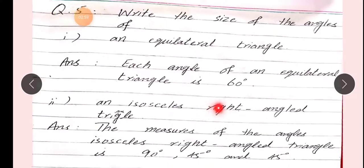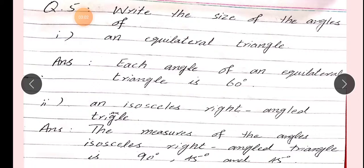Next, question number 5: Write the size of the angles of number 1, an equilateral triangle. Hamne inmen angles ke size batane hain. First poocha gaya hai, equilateral triangle mein. Iska answer hai: Each angle of an equilateral triangle is 60 degrees. Agar hum 60 degree ka har angle draw karein, to woh hamari equilateral triangle draw ho jaayegi.